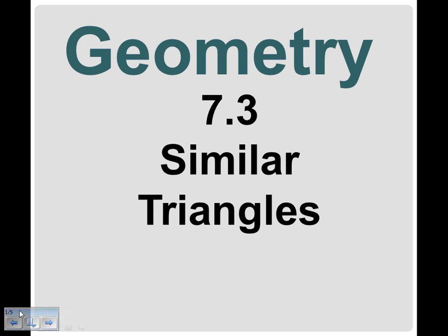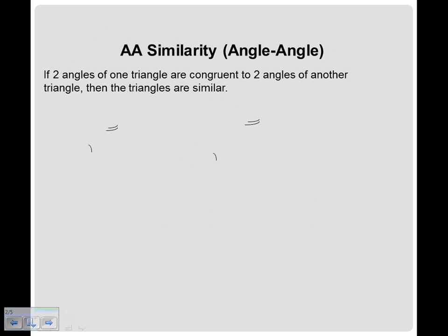There's going to be a lot like that. Our first one is just AA. Angle angle similarity. This is going to be the easiest one to use, because it requires the least information. And you don't actually have to do anything. You got it?